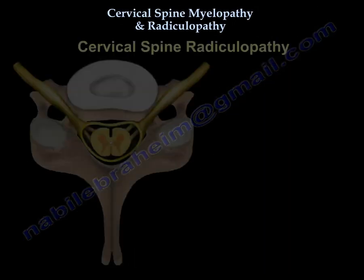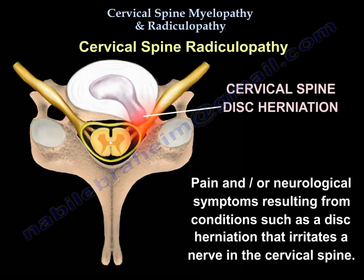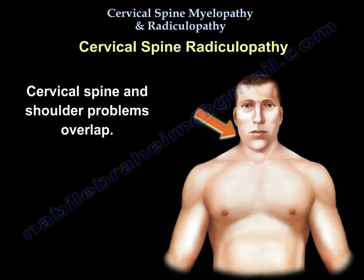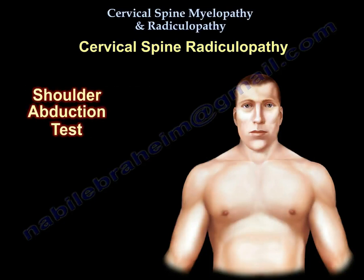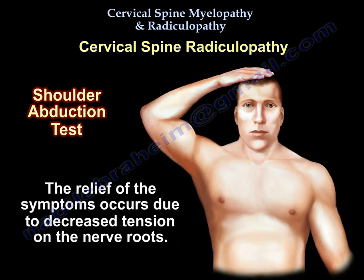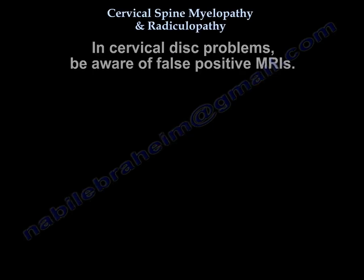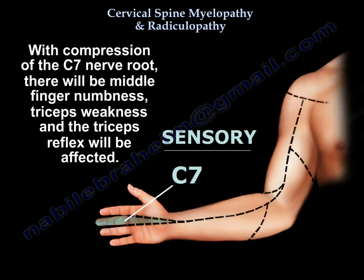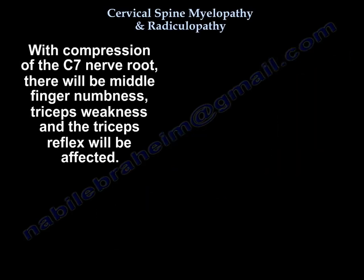Now let's go to cervical radiculopathy. The cervical spine and shoulder problems overlap. The condition is of cervical etiology if relief of pain occurs with shoulder abduction by placing the hand over the head. Be aware of false positive MRIs. Disc problems usually involve the lower-numbered root — so at C6-C7, you will get the C7 nerve root, giving middle finger numbness, triceps weakness, and affected triceps reflex.